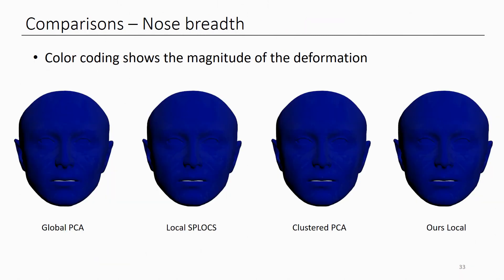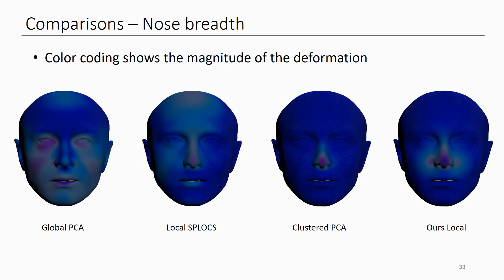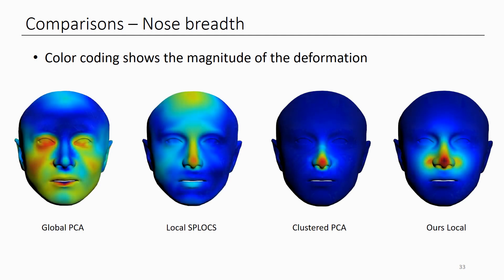We made a comparison among global PCA, SPLICE, cluster PCA, and our approach by adjusting the nose breadth. Note that the color coding here is not representing an error; instead, it indicates the respective per-vertex deformation in Euclidean space. We can see that even though we wanted to adjust the nose breadth, the adjustment using global eigenvectors and SPLICE resulted in significant deformation all over the face, while cluster PCA and our approach could focus the deformation around the nose. Looking closely, cluster PCA changes a small portion of the tip of the nose instead of the width of the nose, in comparison with our approach.